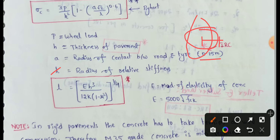Next, L means Radius of Relative Stiffness. This Radius of Relative Stiffness is very important. Talking about Westergaard's Equation, L equals Radius of Relative Stiffness. This is the important formula, where E means Modulus of Elasticity of Concrete and K means Modulus of Subgrade Reaction.